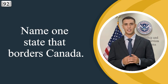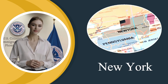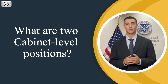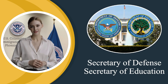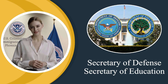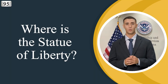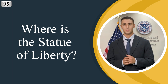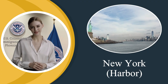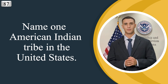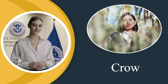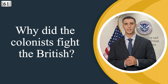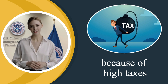Name one state that borders Canada. New York. What are two cabinet level positions? Secretary of Defense, Secretary of Education. Where is the Statue of Liberty? New York Harbor. Name one American Indian tribe in the United States. Crow. Why did the colonists fight the British? Because of high taxes.